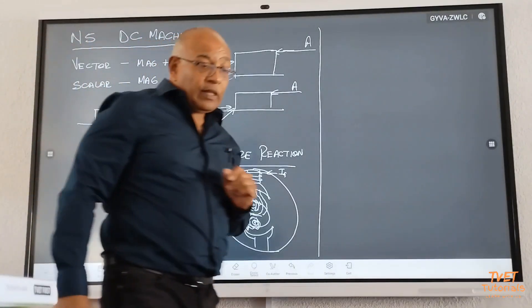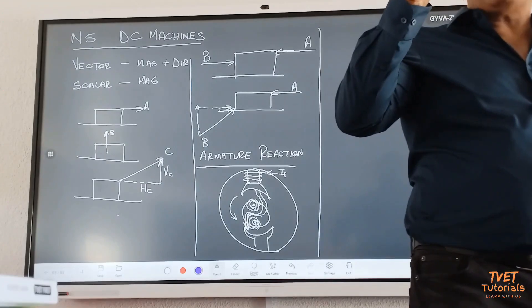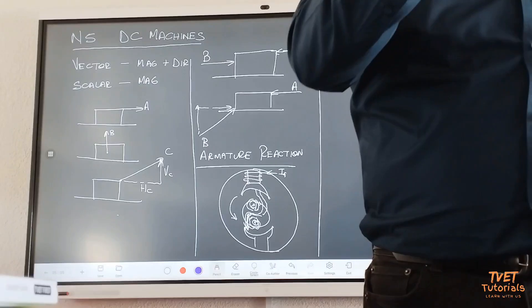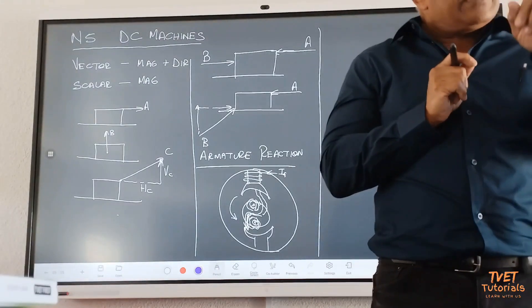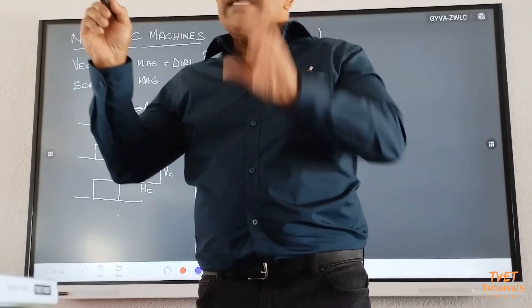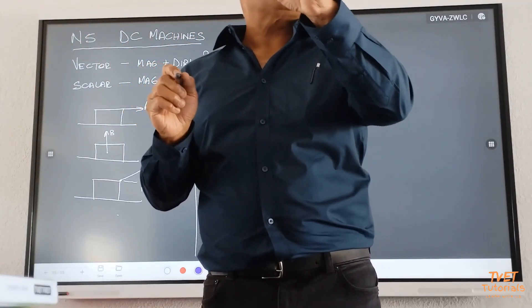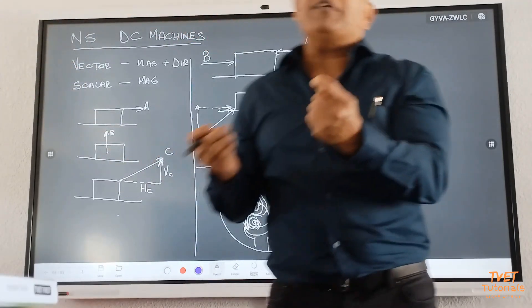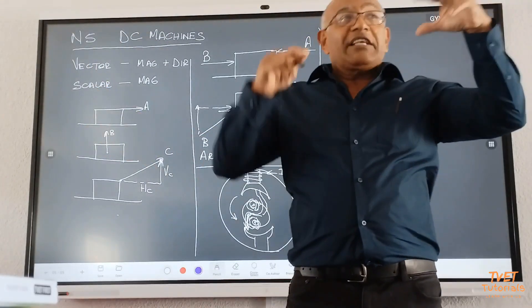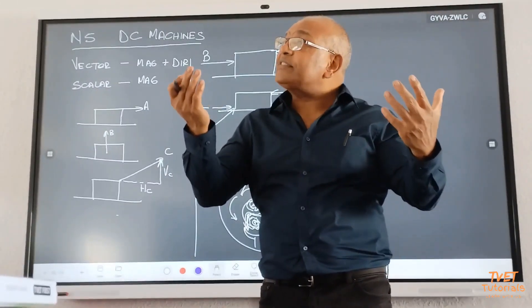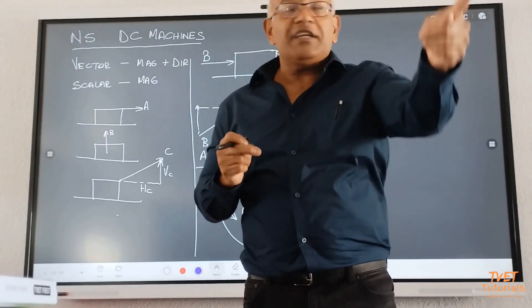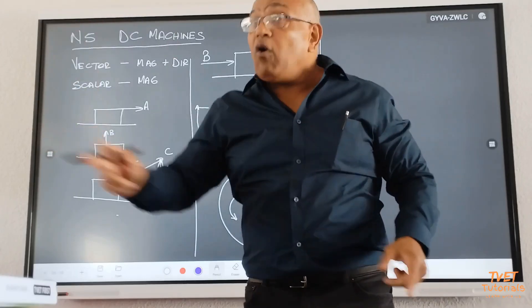So, the principle of operation of a generator is given by what? By Faraday's law. What did Faraday's law tell us? Whenever we rotate a coil of wire inside a magnetic field, what happens? There's going to be an EMF induced. That's what we do. And what is the function of the EMF? To produce current flow. As soon as current begins to flow, what does the EMF then do? It maintains the potential difference, and it is the potential difference that now ensures that the current flows.